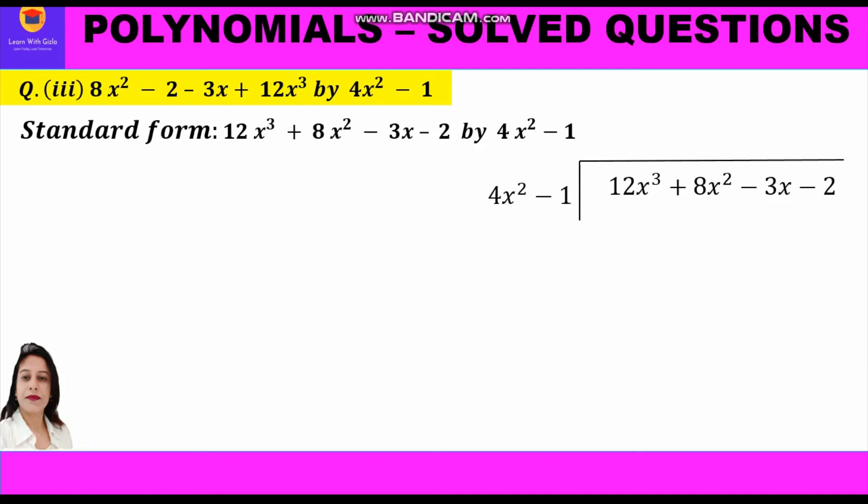We start with the first step, division: 12x³ divided by 4x² equals 3x, so 3x is our quotient written on top. Another way is to think: what should be multiplied to 4x² to get 12x³? The answer is 3x.